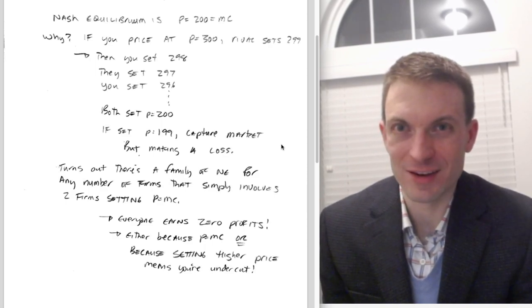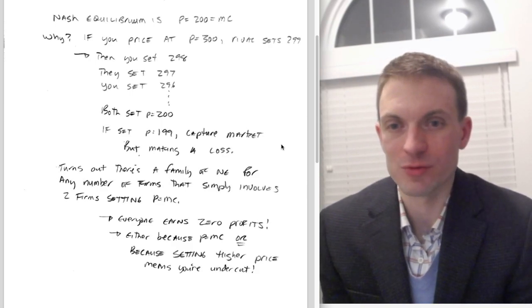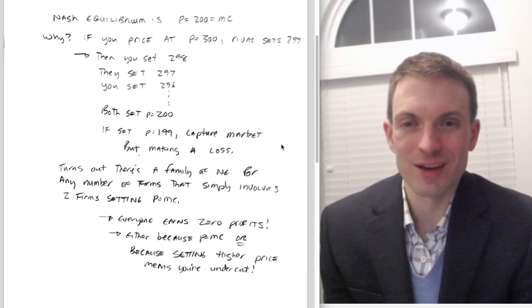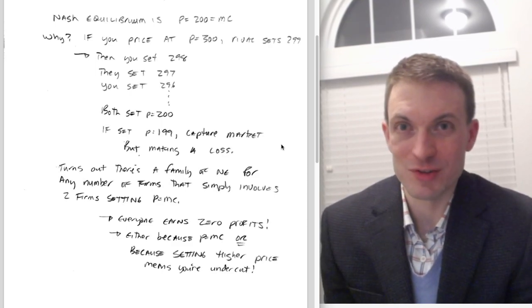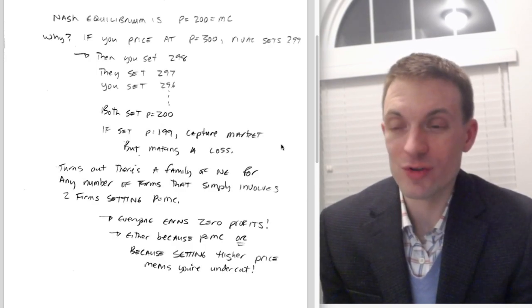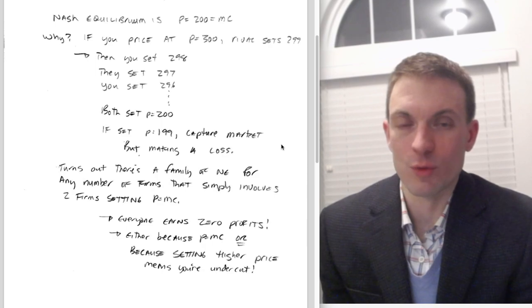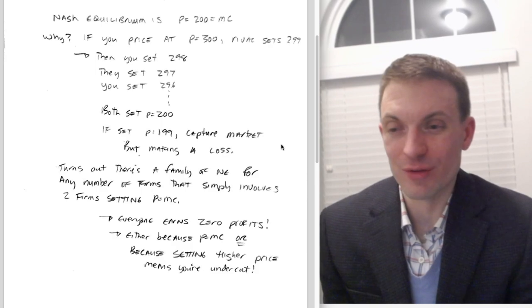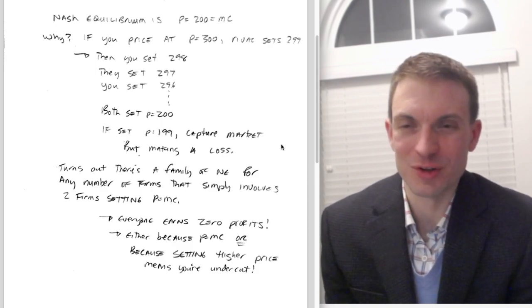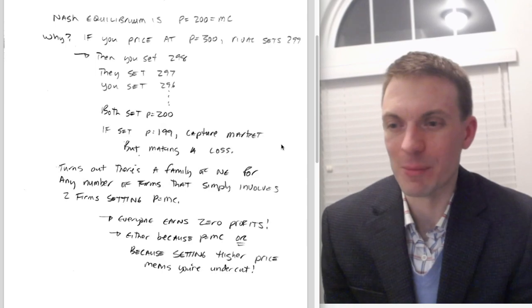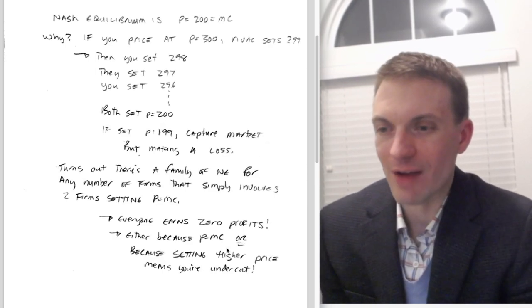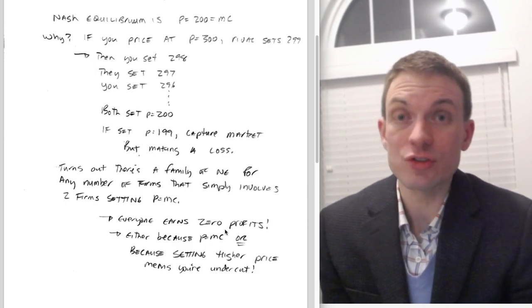Why? Well, the two firms that are setting price equal to marginal cost—nobody has a profitable unilateral deviation. If you're setting price equal to marginal cost, your rival can't deviate to go lower because they're gonna capture the market but they'd be making a loss. Setting 199 is not a good idea. Or they could go up to 201 or something higher, but 201 is gonna be just as good as a million because you're gonna earn zero profits either way, because somebody setting price equal to 200 is gonna undercut anything higher. What about everybody else in the market? They're earning zero, and they'd be earning zero if they were to set price equal to 200 as well, because at price equal to marginal cost, we'd assume zero economic profits.